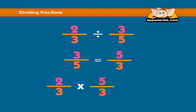Now multiply straight across. 2 times 5 is 10, and 3 times 3 is 9. So the answer is 10 over 9.